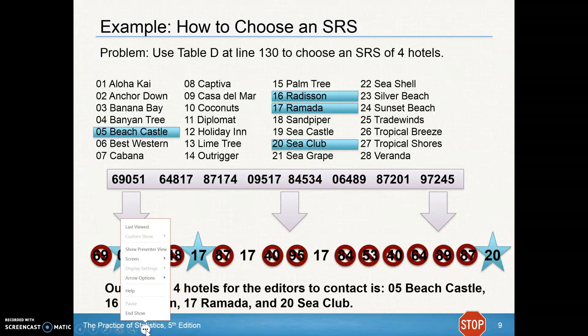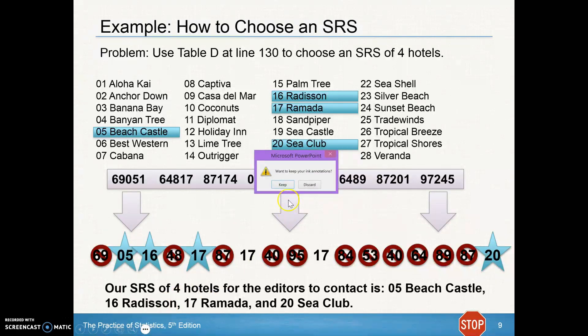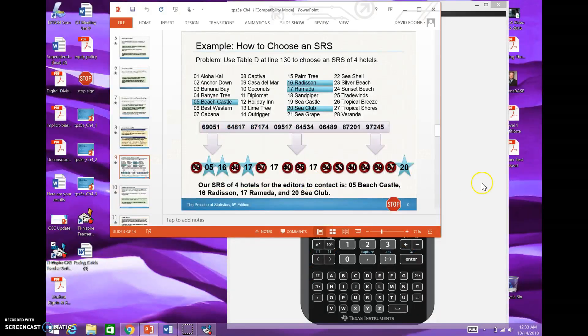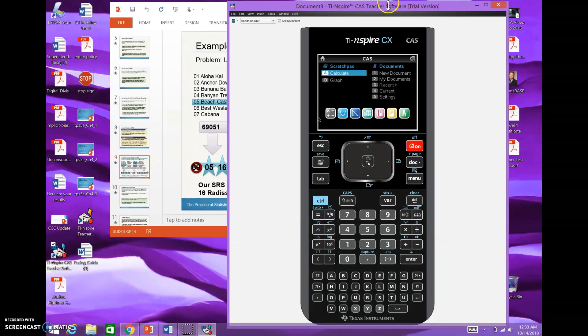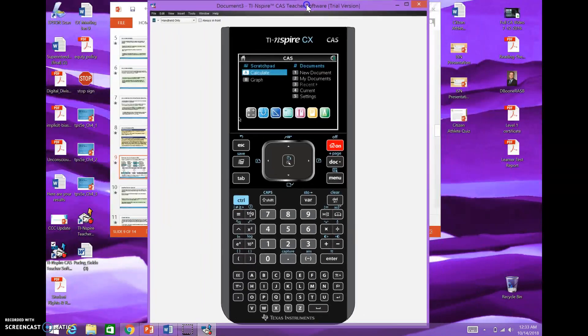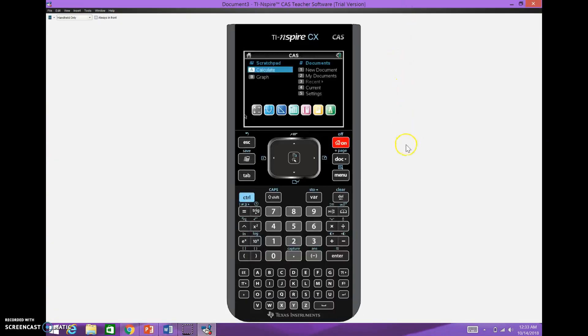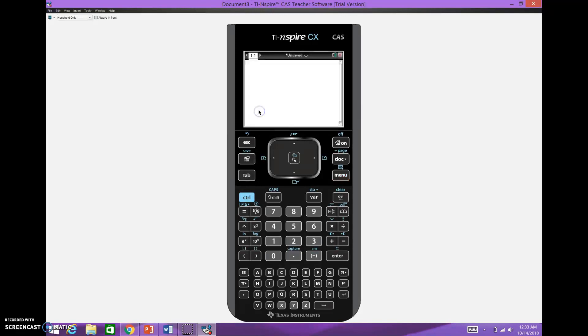All right, what I'm going to do is show you how you can use the calculator for this. What you would do to create a random digit, let's just pretend we're doing the rolling of the die. So I would go to Menu. Oops, sorry. I've got to first go into the calculator.